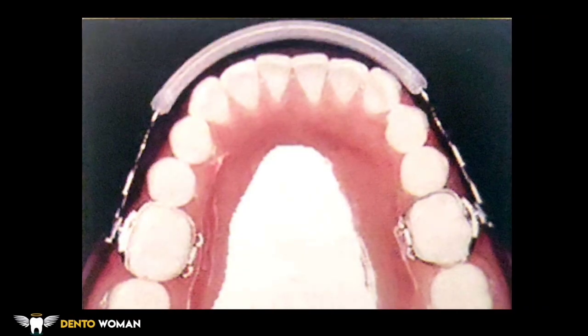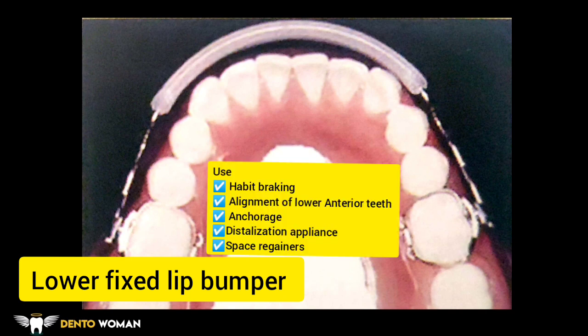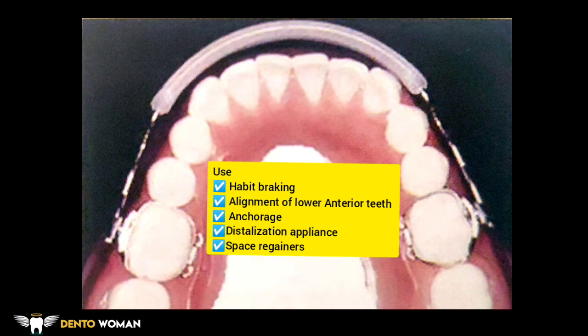Here is an image of a lower fixed lip bumper. Lip bumpers are used in patients exhibiting abnormal habits such as lower lip sucking. They are also indicated for alignment of lower anterior teeth, to augment anchorage, and for distalization. The mandibular molars can be distalized by lip bumpers that incorporate a spring or loop anterior to the first molar. They are also used as space regainers.